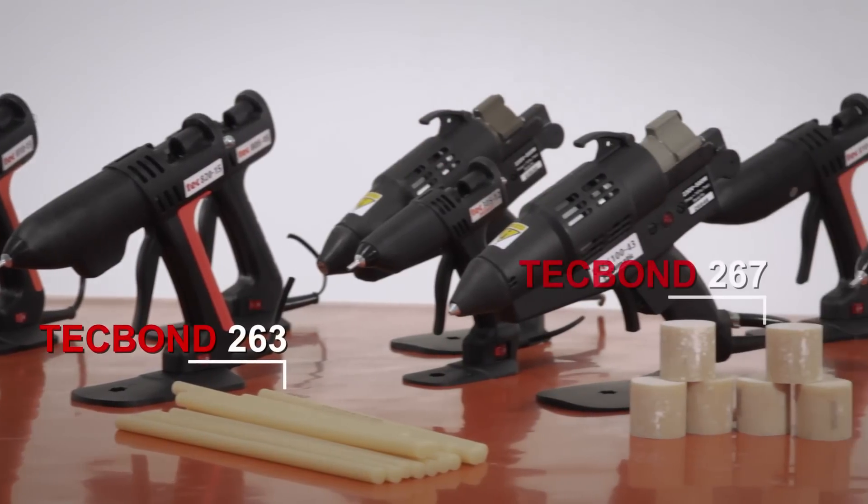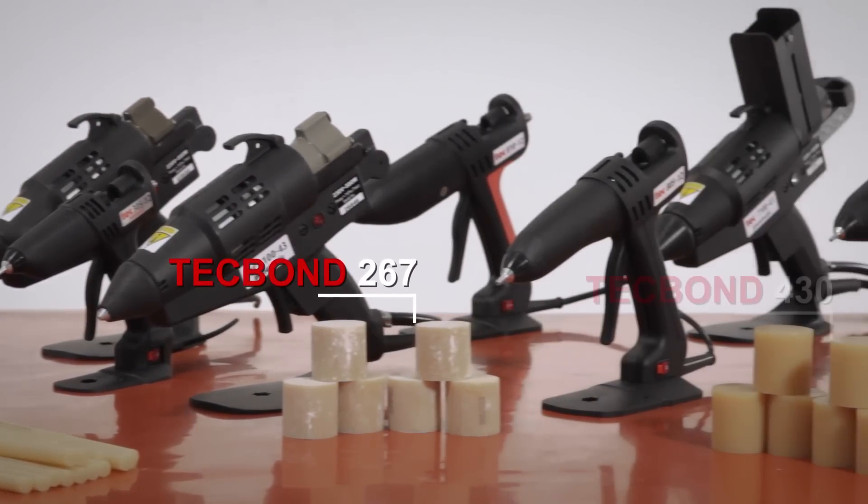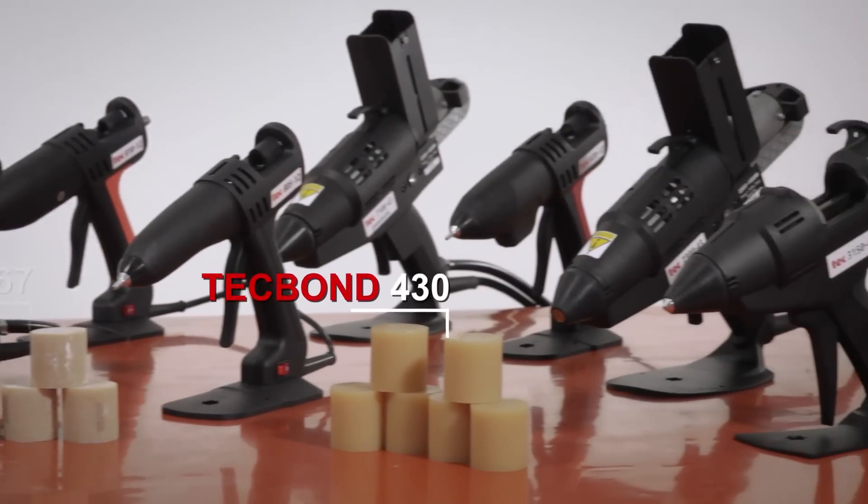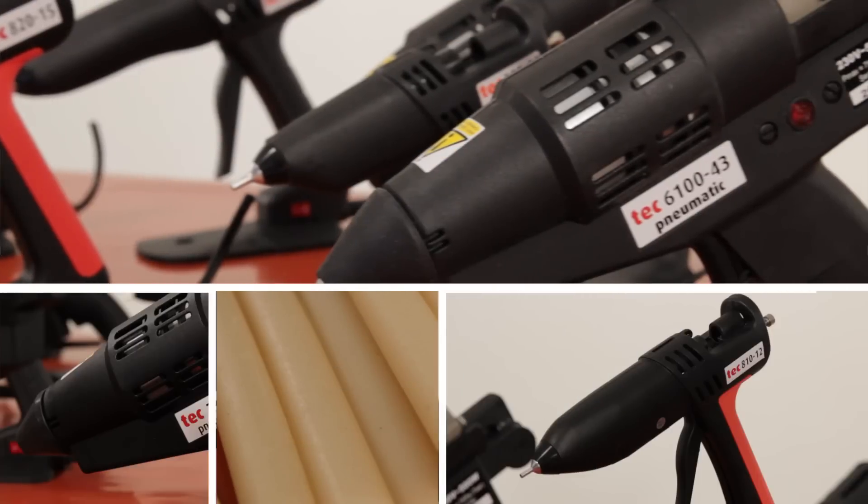Here we have our range of Tekbond hot melt adhesives designed for the purpose of bonding polypropylene. All of these adhesives can be applied by our range of Tekglue guns.